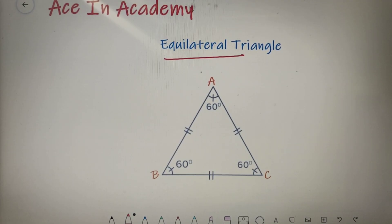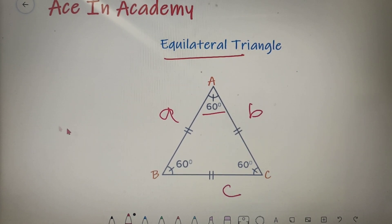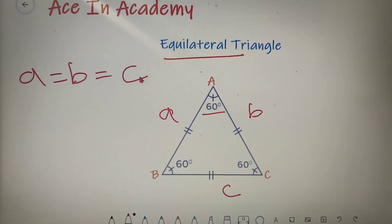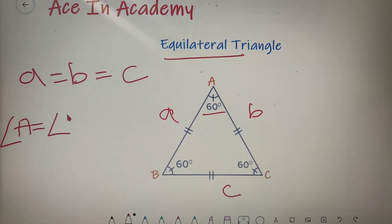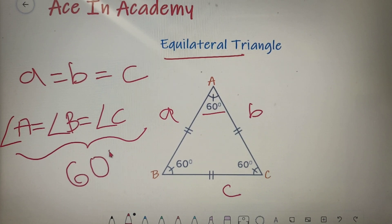For an equilateral triangle, all the sides are equal and all the angles are equal, and each angle is equal to 60 degrees. If I denote this side as A, this side as B, and this side as C, then I can say that A is equal to B and B is equal to C, and all the angles — angle A, angle B, and angle C — are all equal to 60 degrees.